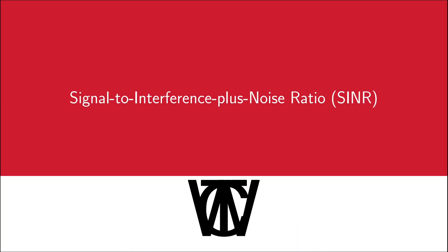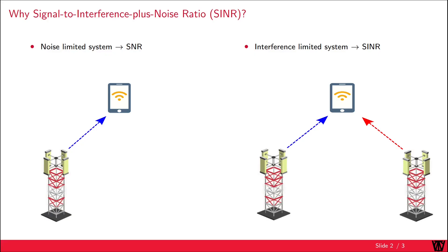In today's video I will explain the performance indicator called signal to interference plus noise ratio. First of all, why do we need this performance indicator if we already have the signal to noise ratio from the previous video?